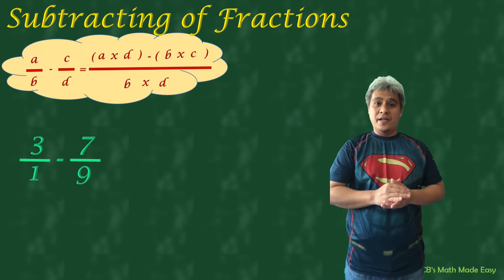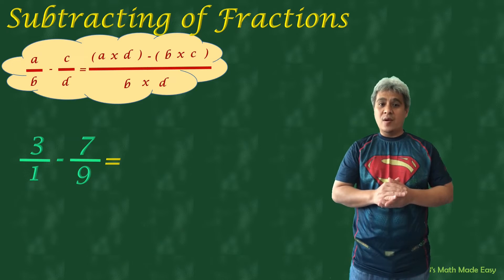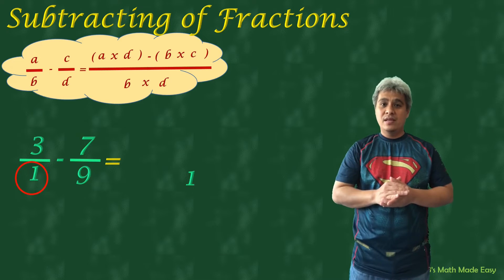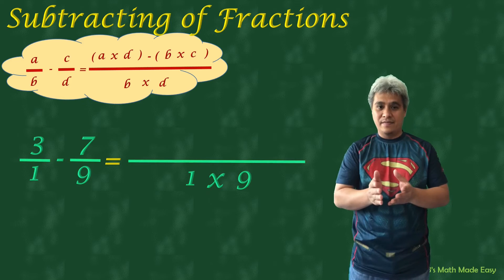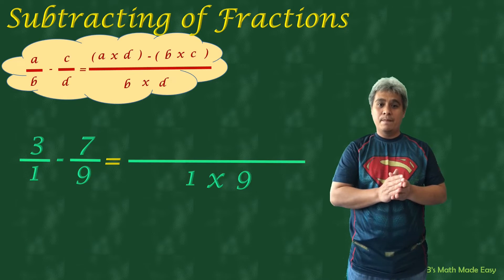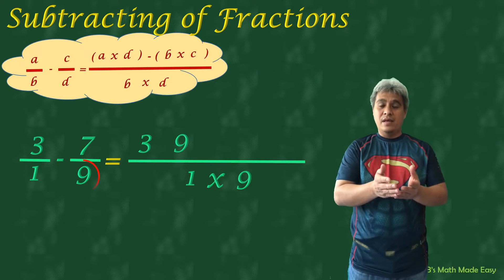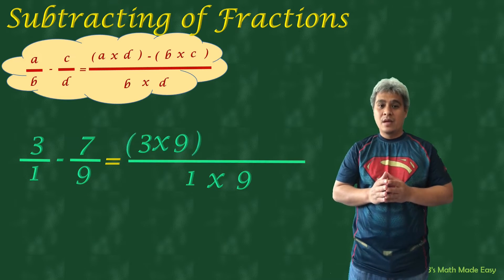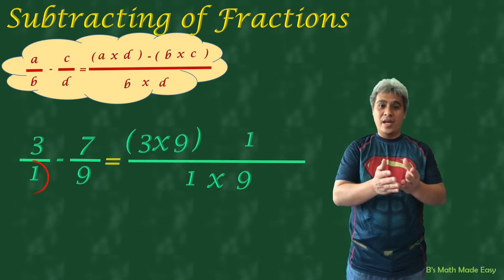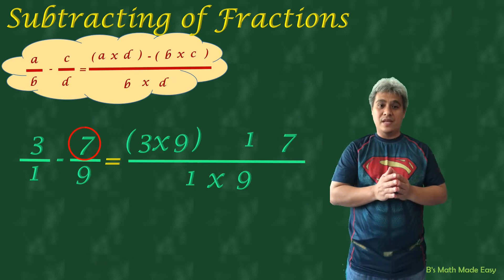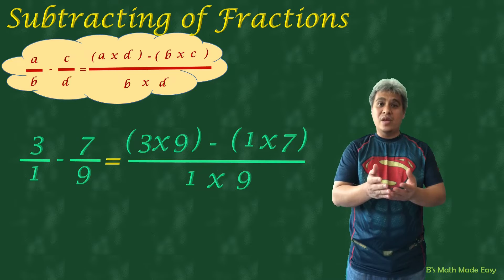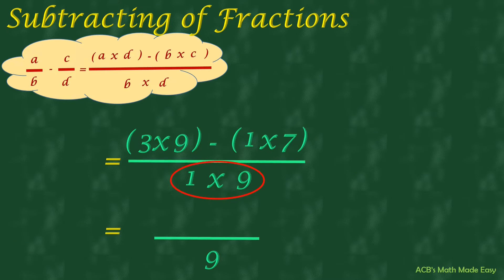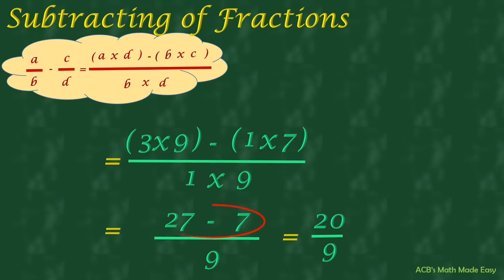The denominators are not the same. Applying the formula, we can get all their values. The value of B is 1 and the value of D is 9. The value of A is 3 and the value of D is 9. The value of B is 1 and the value of C is 7. So: 1 times 9 equals 9; 3 times 9 equals 27; 1 times 7 equals 7. Our denominator is 9. 27 minus 7 equals 20.